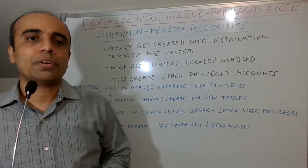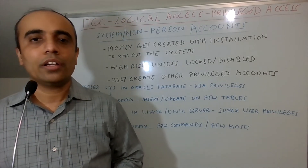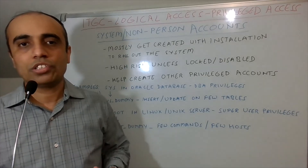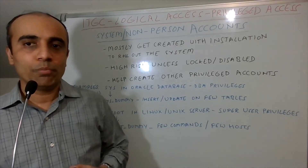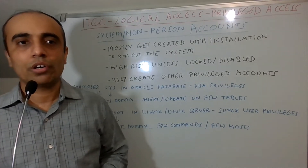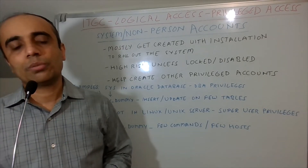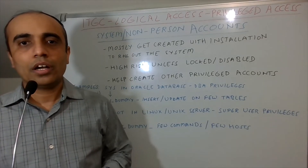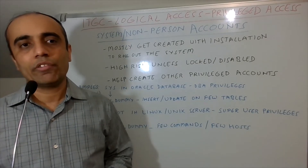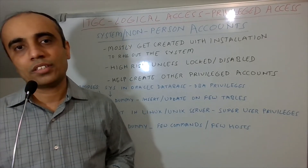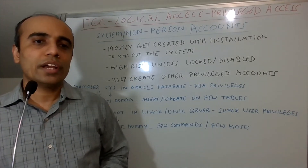Because system accounts are created during installation, by default they are what we call super user accounts. They have privileges beyond a regular user — almost all privileges for that system, be it an application, server, or database. This is required to roll out the system and get it up and running. Unless these accounts are locked or disabled after installation, they always remain a high risk from a privilege access standpoint.